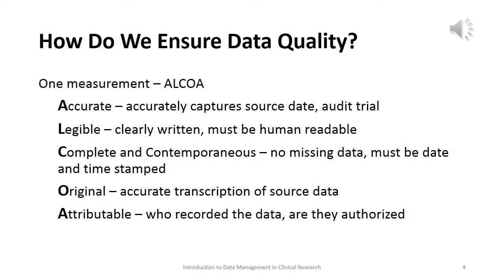Let's talk about data quality and how we ensure it. We use the acronym ALCOA to help us understand that. The 'A' stands for accurate, meaning data accurately captures source data and provides an audit trail. Data also needs to be legible — clearly written and human readable — so that even in electronic form, we can view the data and tell exactly what it is.